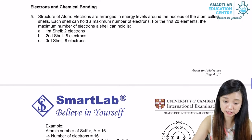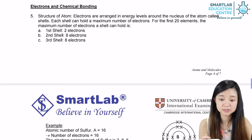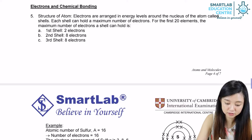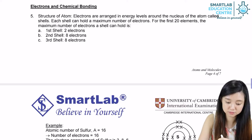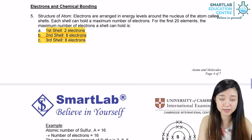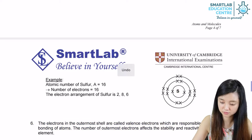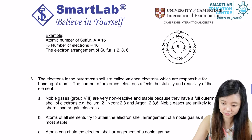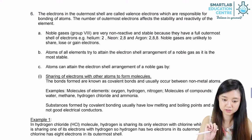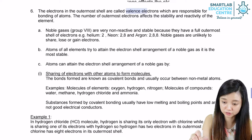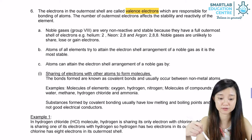As we mentioned earlier, in the structure of an atom, the electrons are arranged in electron shells. The first shell consists of a maximum of 2 electrons, the second shell will be 8, and the third shell will be 8 electrons. The electrons in the outermost shell we call the valence electrons, as they are the ones responsible for bonding of the atoms.